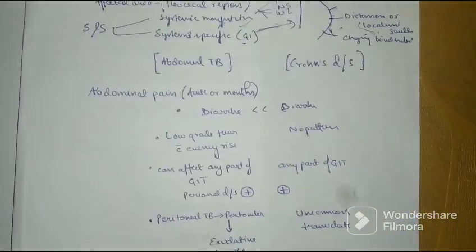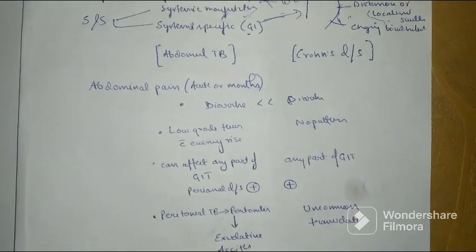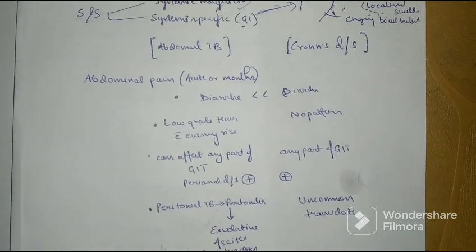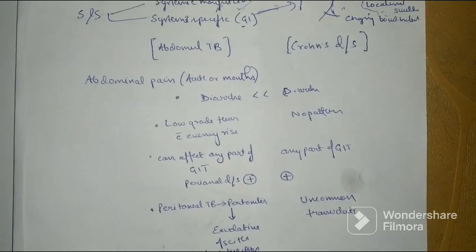Since Abdominal TB and Crohn's disease have very much similar findings in radiology and histology along with their symptoms, we need to differentiate it. So we will discuss here some of the points which differentiate Abdominal TB and Crohn's disease.